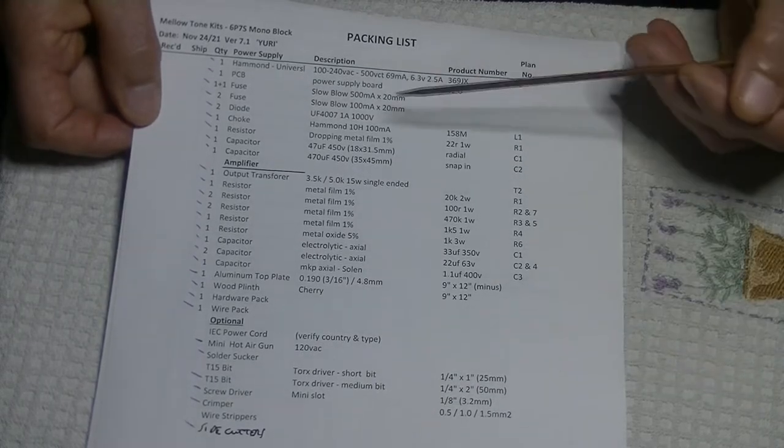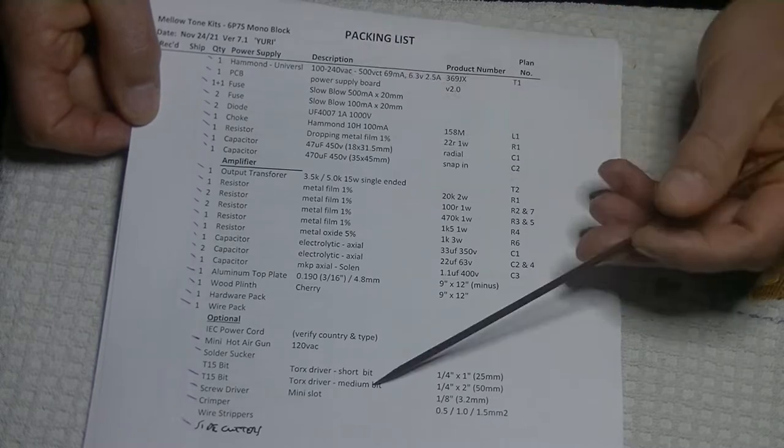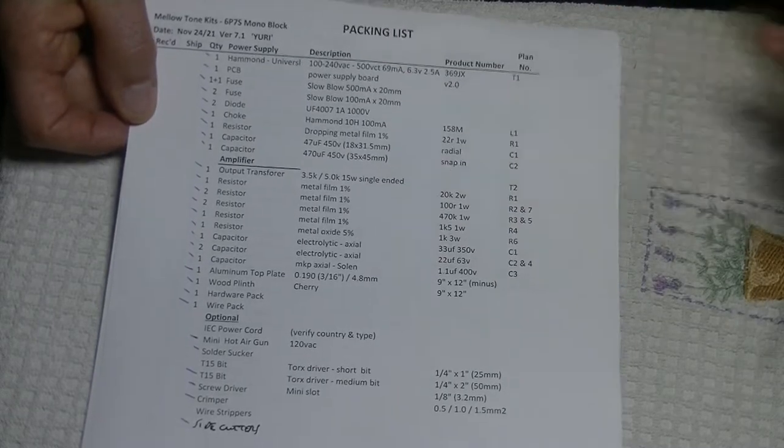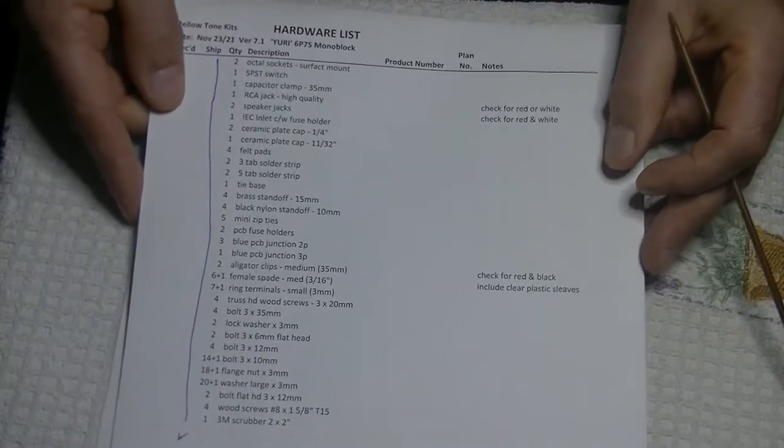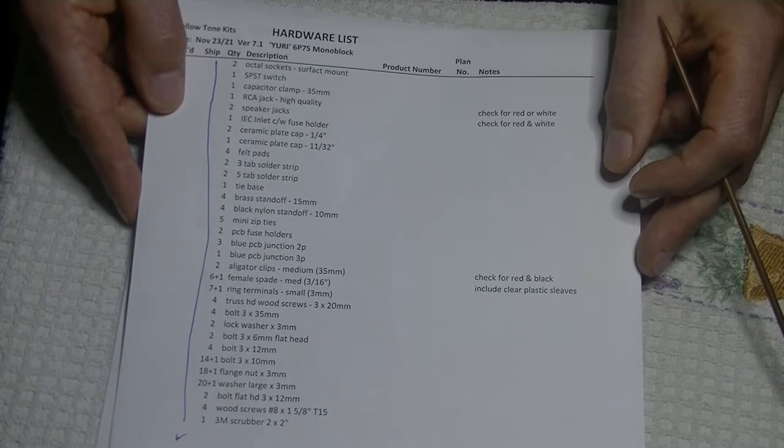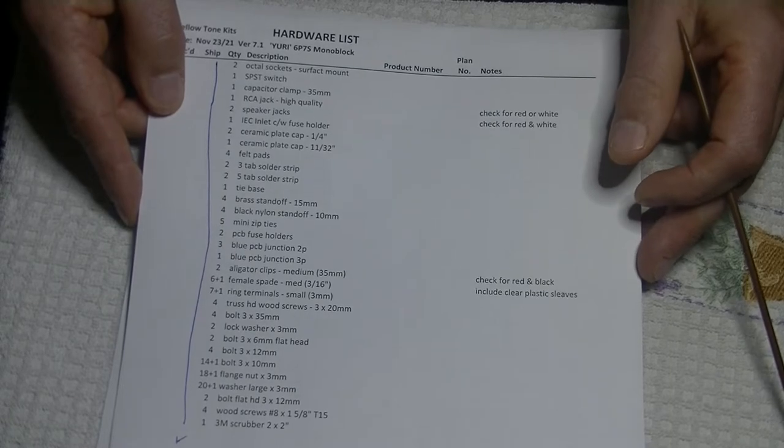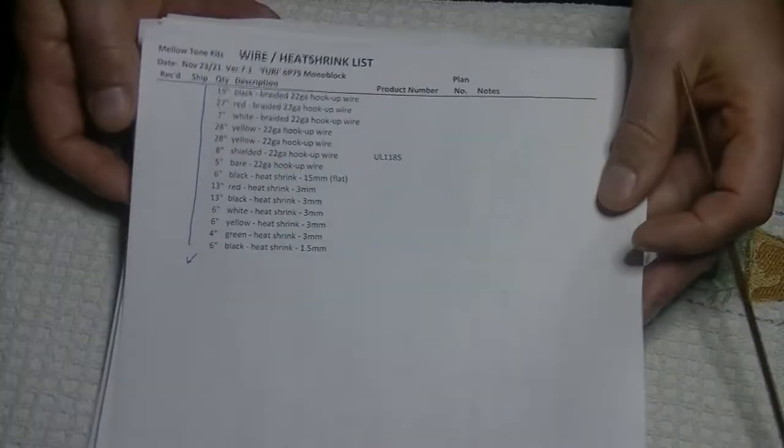You're going to have packing lists. I'm really careful about pulling parts for the amp. You don't need to go and check off everything, but it's handy if you're not sure about something you can go back to the original list. Same goes for the hardware. There's a lot of parts. There's actually something like 170 individual pieces to make up the little Yuri. Can you imagine? It takes a long time to pull 10 amps worth.